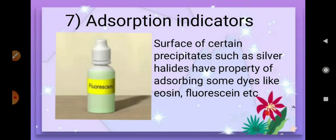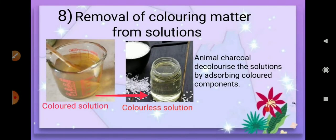Adsorption indicators: the surface of certain precipitates such as silver bromide has the property of adsorbing some dyes like eosin. Removal of coloring matter from solution: many substances such as sugar juice and vegetable oils are colored due to the presence of impurities. They can be decolorized by placing them in contact with adsorbents like activated charcoal, and this method is commonly used in the manufacture of sugar from cane sugar.